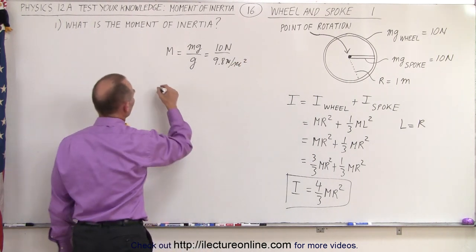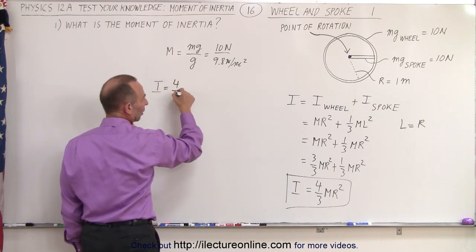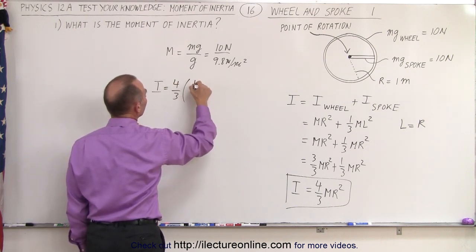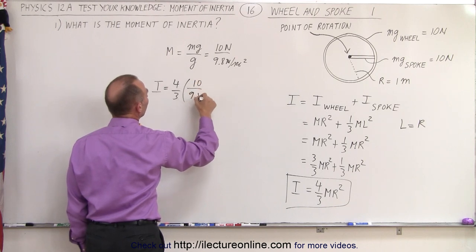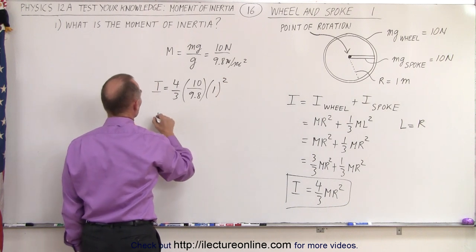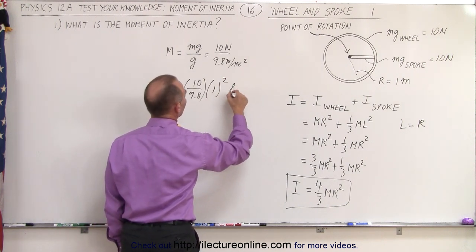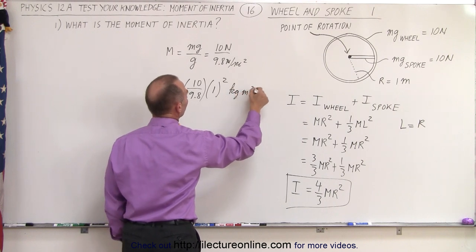So we have I is equal to four-thirds times the mass, which would be 10 divided by 9.8, and we multiply times the radius squared, which is 1 squared. The units for moment of inertia are kilograms meters squared.